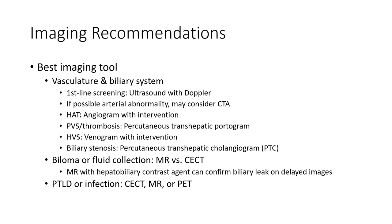Imaging recommendations: the best imaging tool for vasculature and the biliary system is ultrasound with Doppler as the first-line screening. A possible arterial abnormality may require CTA or conventional angiogram with intervention. For portal or hepatic vein thrombosis, percutaneous transhepatic venogram with intervention is used.